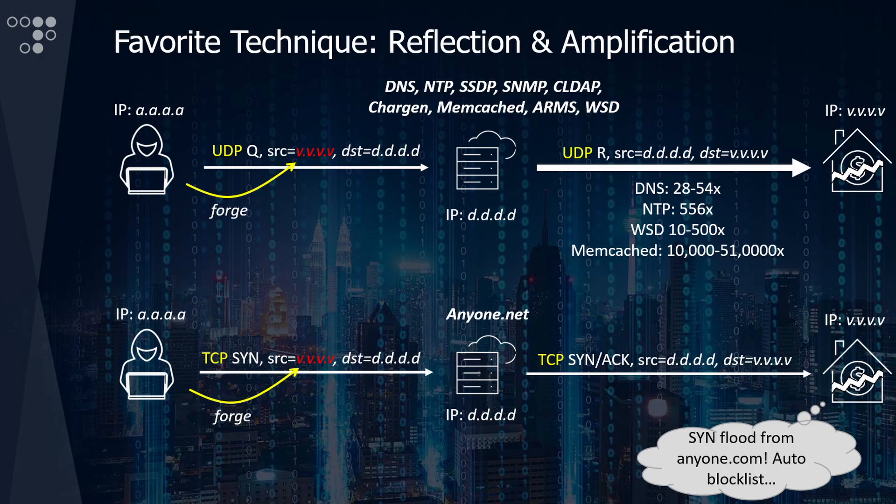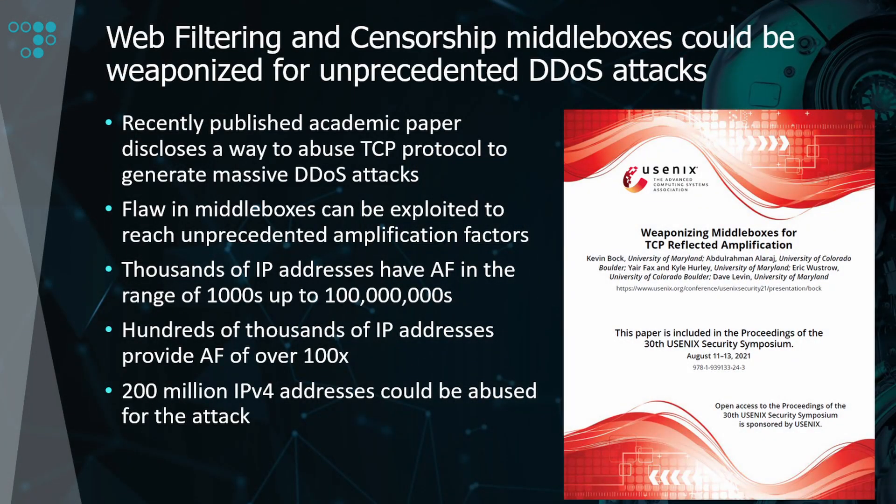Once an amplification server is discovered, the attack server will leverage it in uplink-saturating volumetric denial of service attacks. Do not be mistaken — the internet is full of potential for amplification. Reflection points do not need to be very large servers; we have observed many attacks leveraging well-known router brands that expose DNS services by default. More recently, academic researchers published a paper detailing new ways of leveraging spoofed and forged TCP packets to generate devastating DDoS amplification attacks with amplification factors ranging from 50,000 to 100 million.